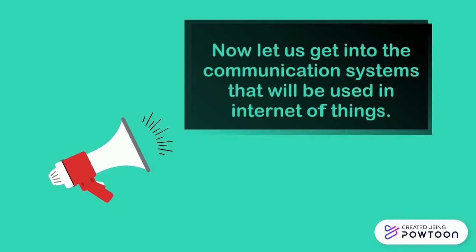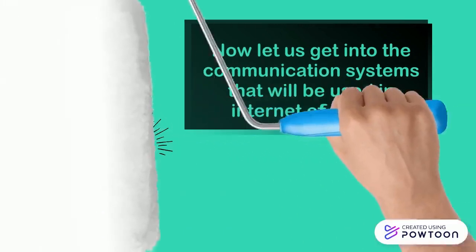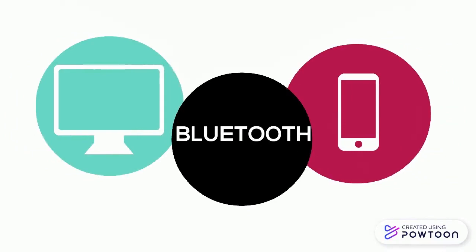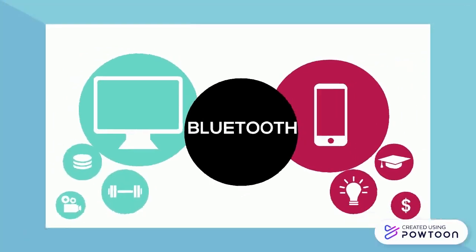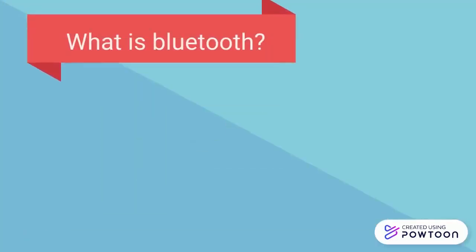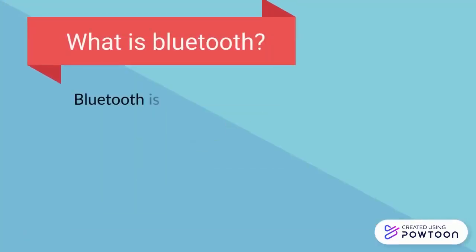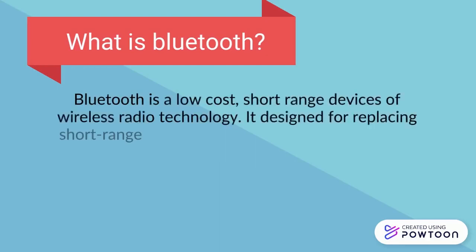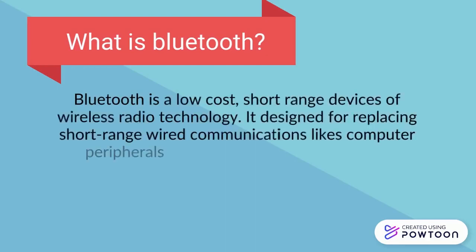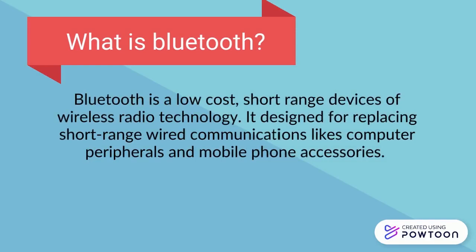Now let us get into the communication systems that will be used in IoT. The first one is Bluetooth. Bluetooth is a low-cost, short-range wireless technology designed with lower power consumption for replacing short-range wired communication, like computer peripherals and mobile phone accessories.